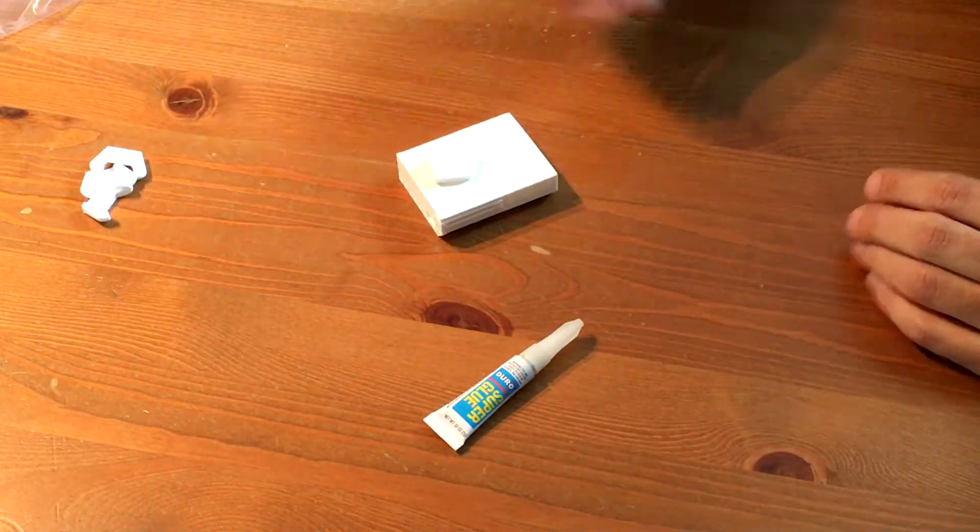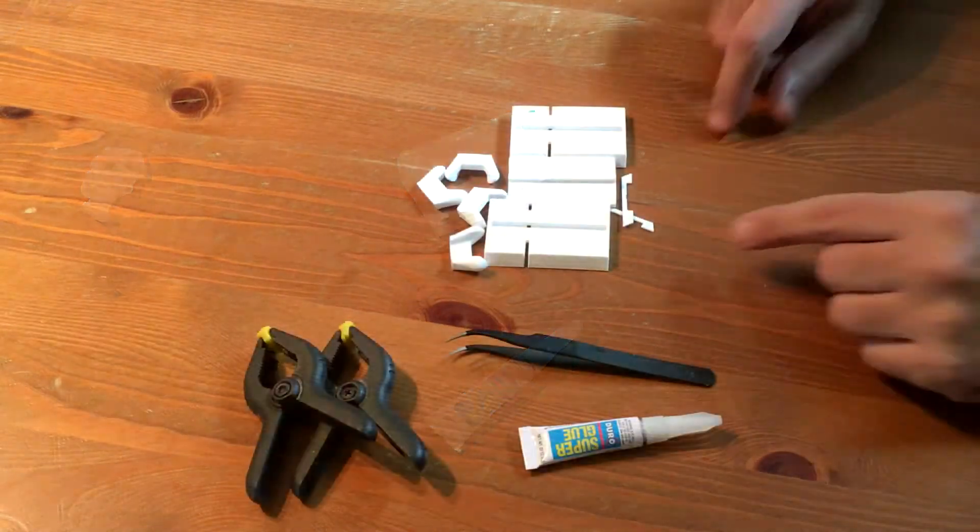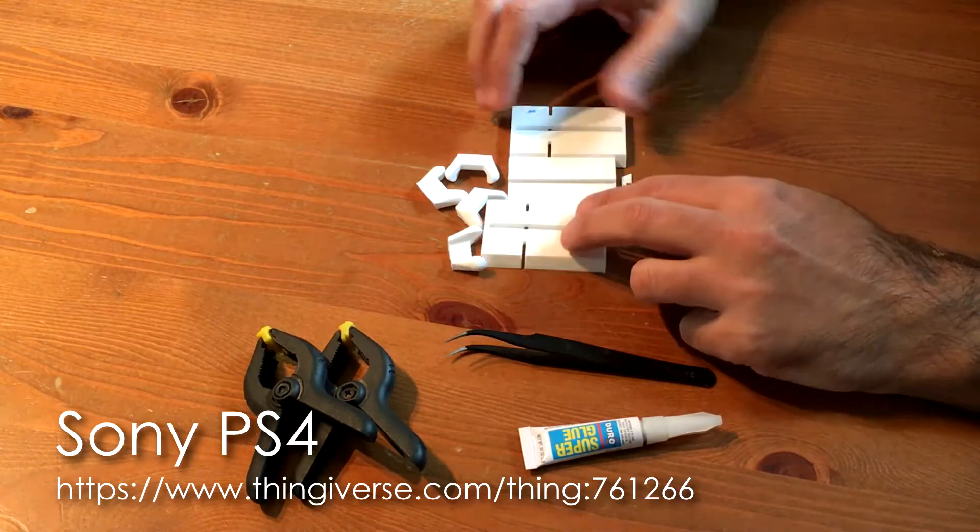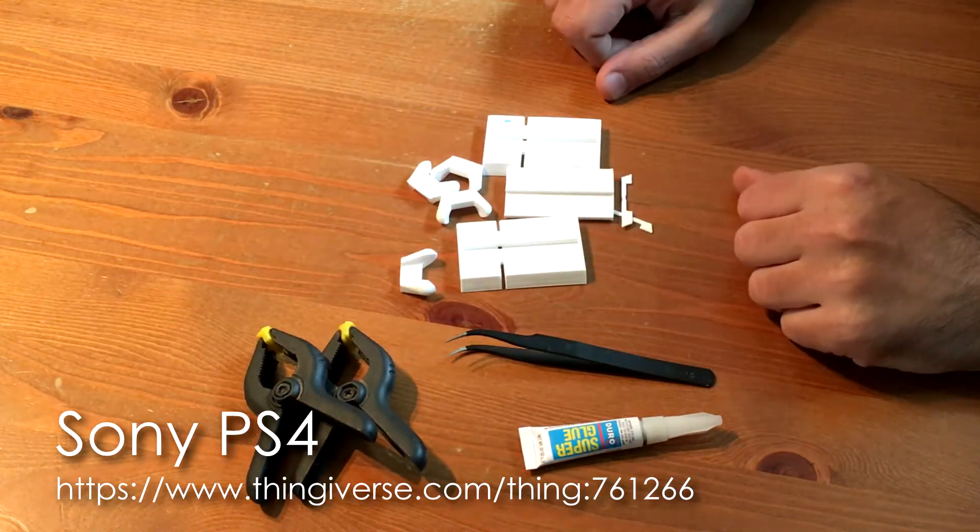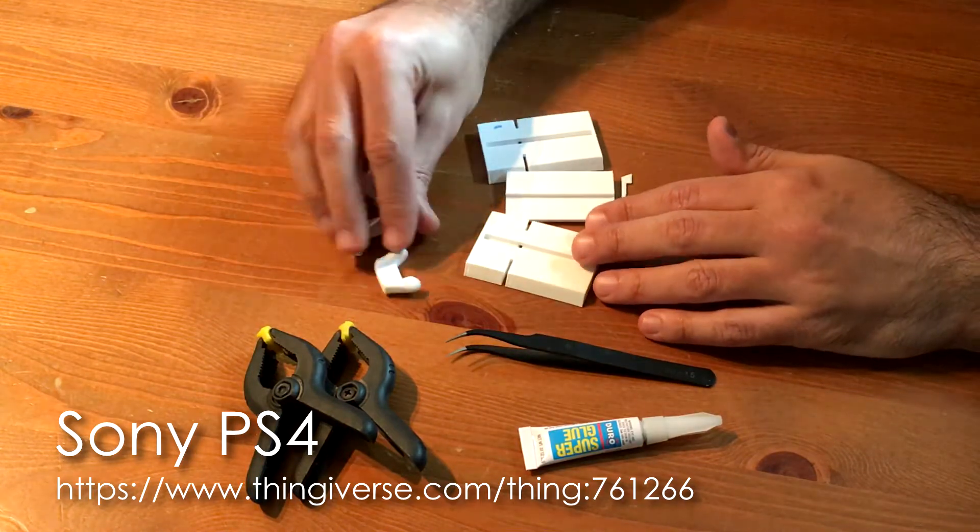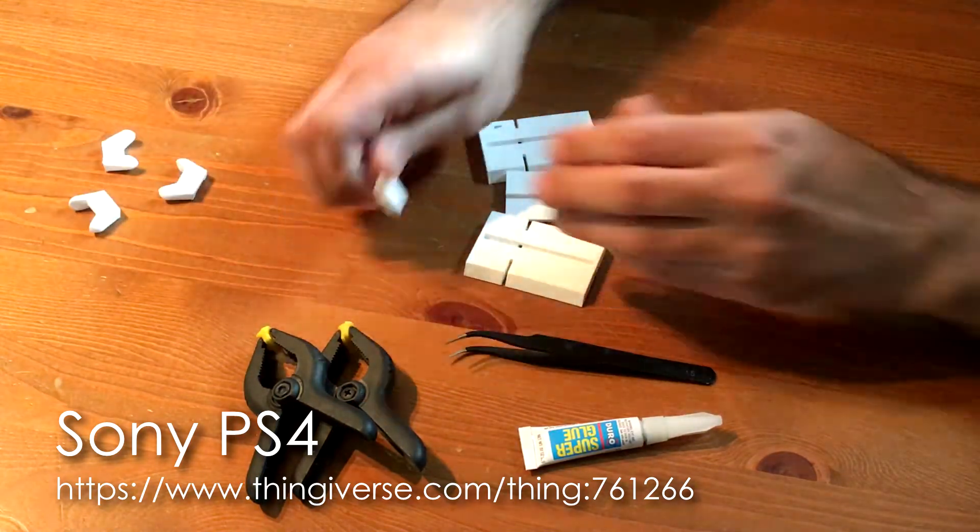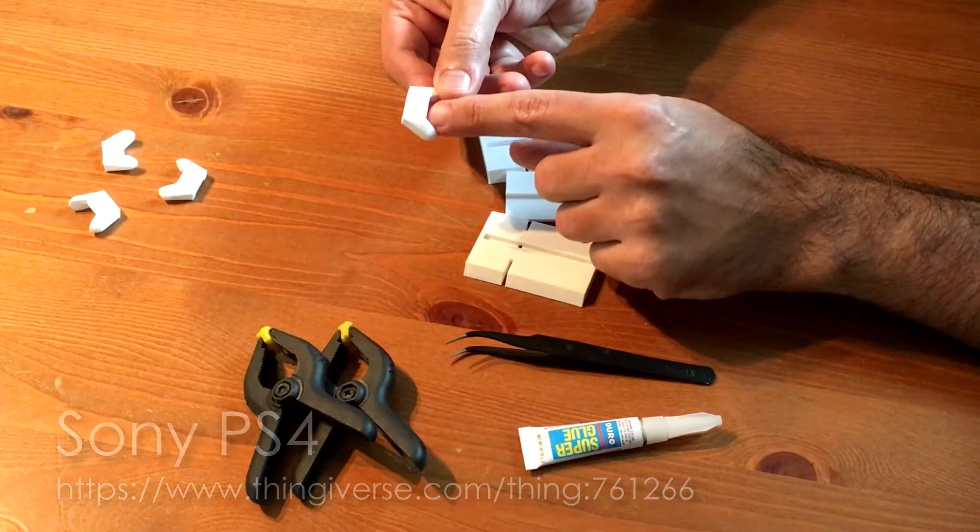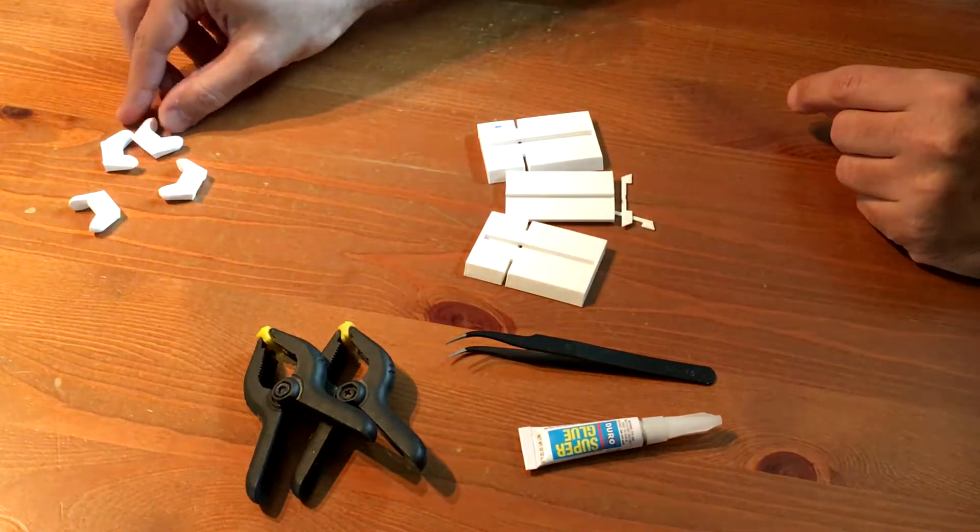Okay, this is the Sony PS4. I printed it at 130% scale so you can see things a little bit more clearly. I printed four controllers. The controllers themselves are very simple—just a single piece and we'll apply a sticker over there. For the body, you've got these five parts.